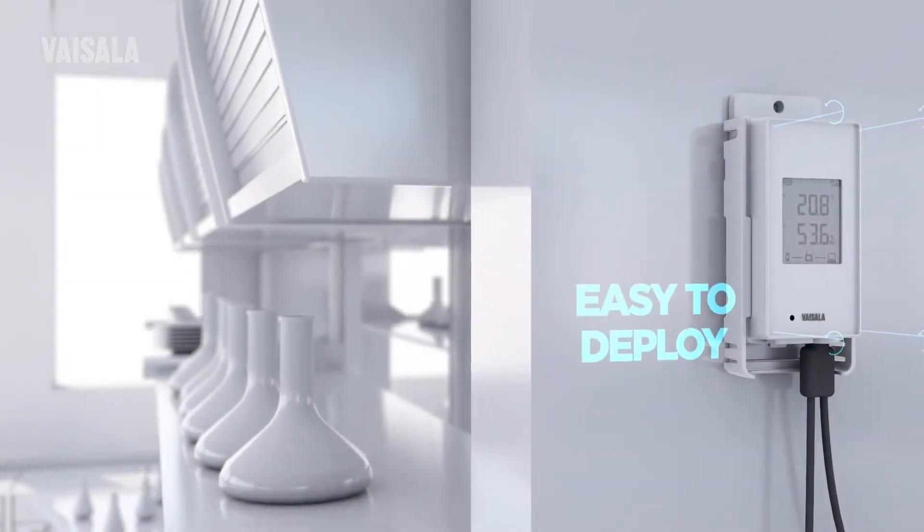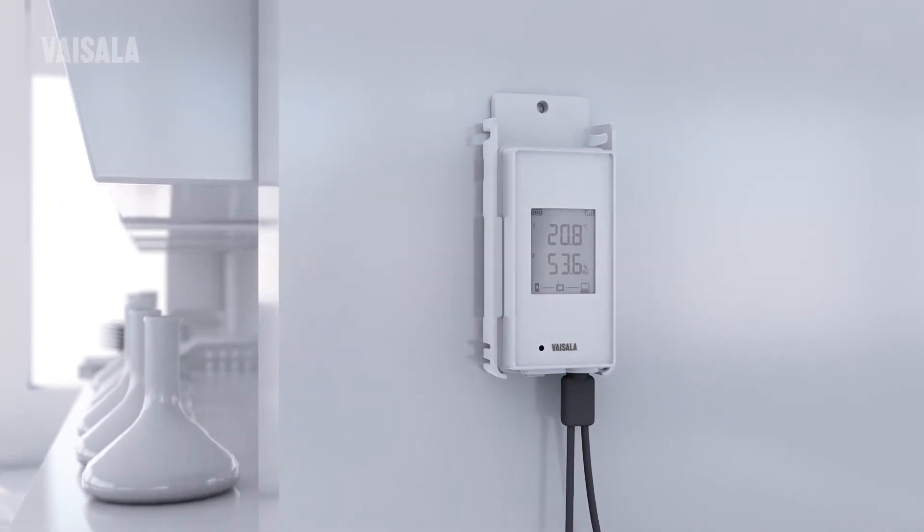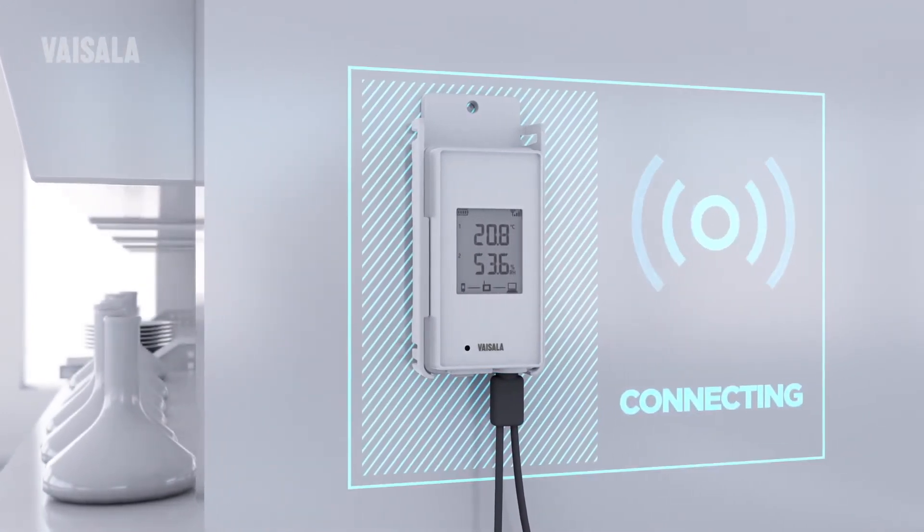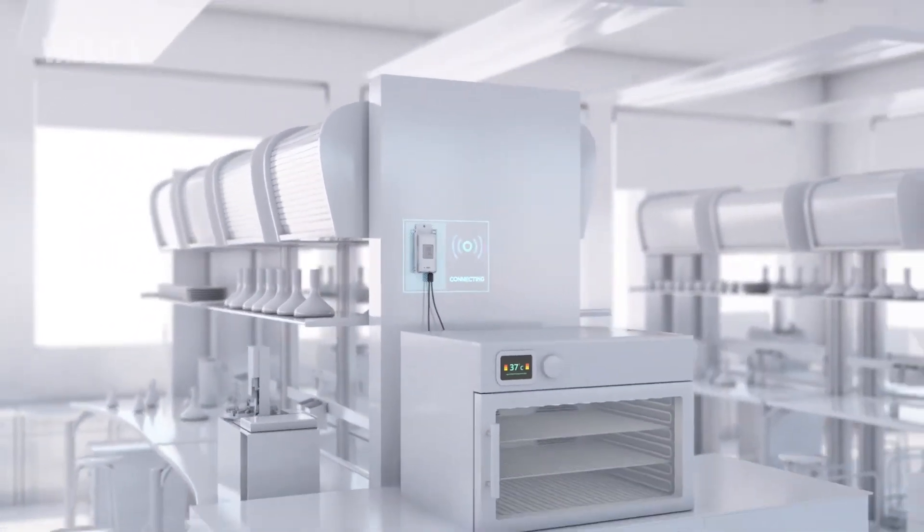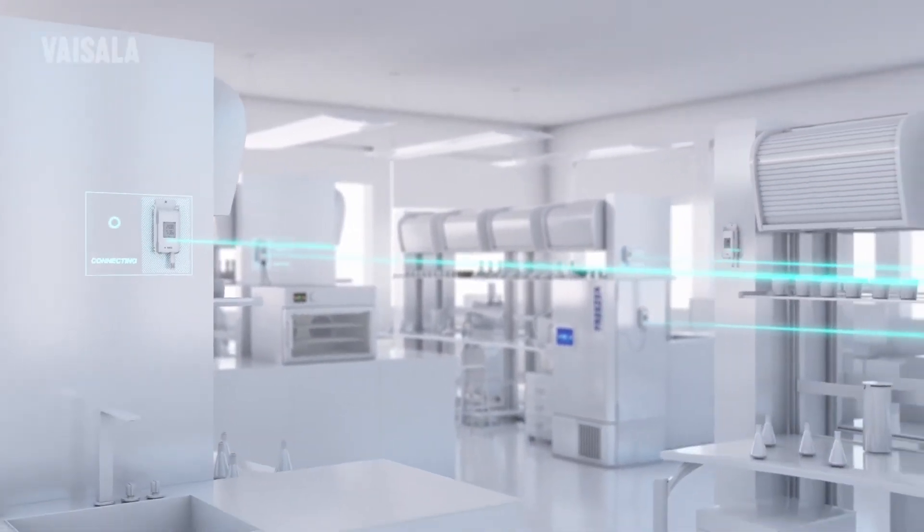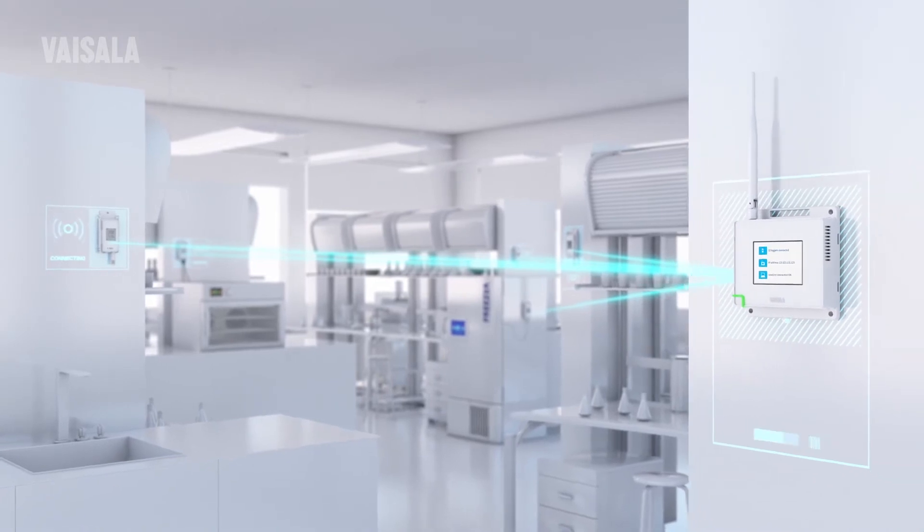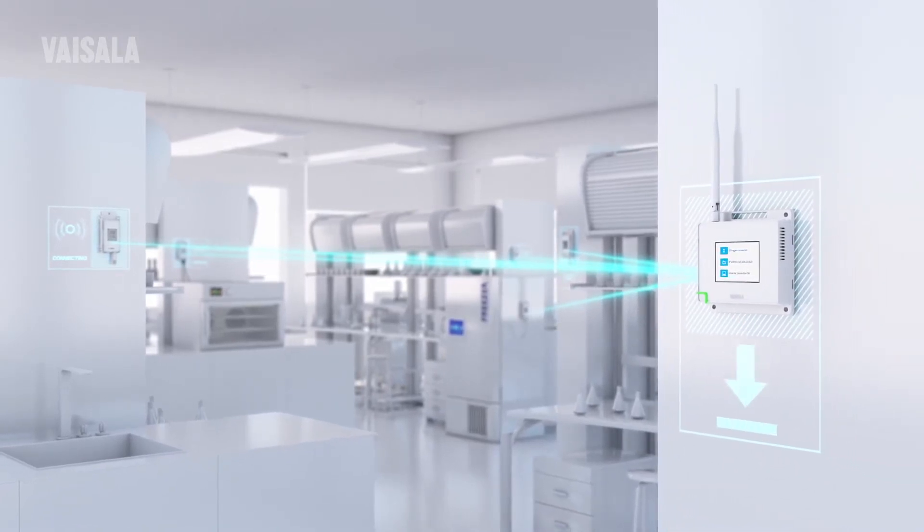Vinet data loggers are easy to deploy. As soon as devices are turned on, they start recording and transmitting data. Each Vinet network access point supports multiple wireless data loggers and automatically recovers from any power or network outage, protecting your historical data.